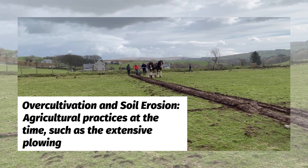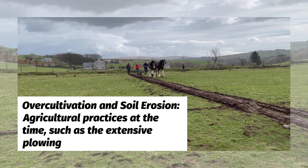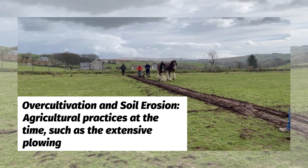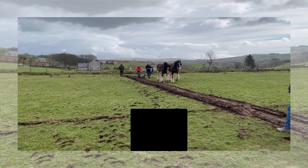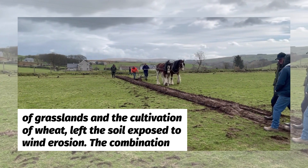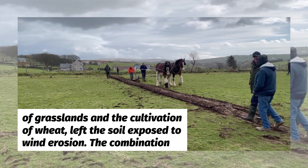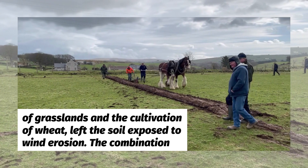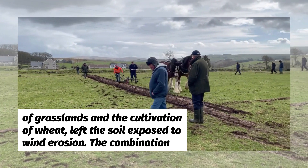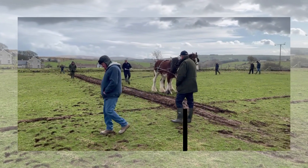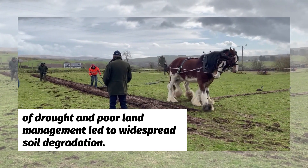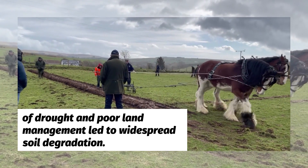Overcultivation and Soil Erosion: Agricultural practices at the time, such as the extensive plowing of grasslands and the cultivation of wheat, left the soil exposed to wind erosion. The combination of drought and poor land management led to widespread soil degradation.